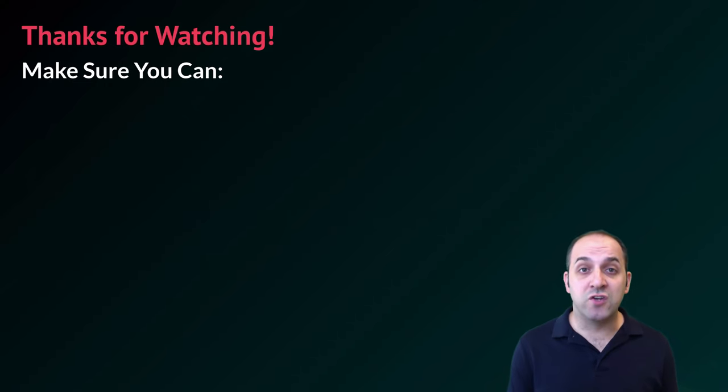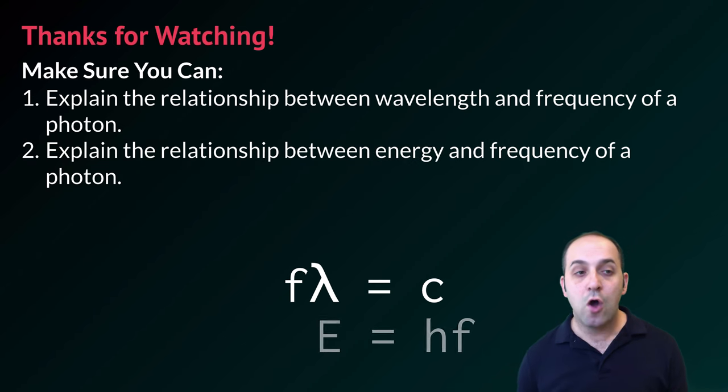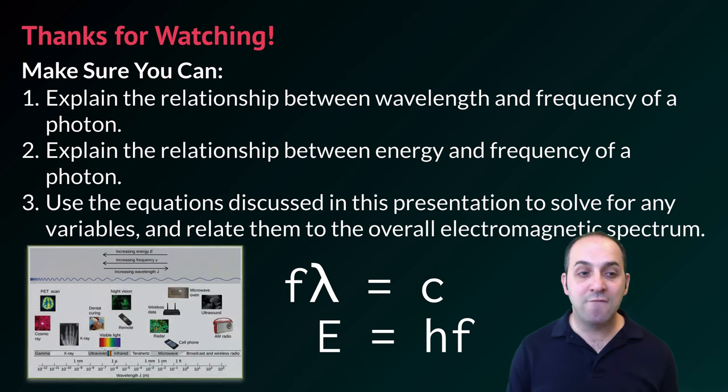Thanks so much for watching this video on light calculations. Please make sure that you can do the following things here at the end. Make sure that you can explain the relationship between wavelength and frequency of any photon of electromagnetic radiation. Also make sure that you can explain the relationship between energy and frequency of any photon of electromagnetic radiation. And finally, make sure that you can use the equations that we've discussed in this presentation to solve for any of the variables and relate them to the overall electromagnetic spectrum. For instance, if you figure out the wavelength of a particular photon, can you tell me where in the electromagnetic spectrum it falls if I give you the electromagnetic spectrum? If you can do these things, you're doing great. If not, that's okay too. Take a moment and write down any questions that you have. You can always leave them in the comments below the video or get in touch with me through the information in the info field. Thanks again for watching. I really appreciate it. Have a great day.